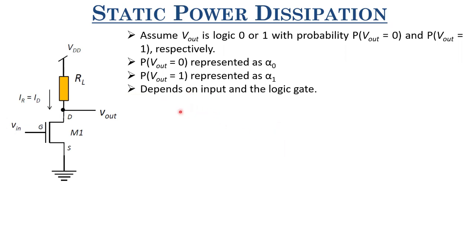Alpha zero and alpha one depend on both the probability of inputs and the kind of logic gate being implemented. These values are important while calculating the transition properties or switching activity of the output, which is very important when discussing dynamic power dissipation. With that, let me talk about the average static power dissipation of circuits.